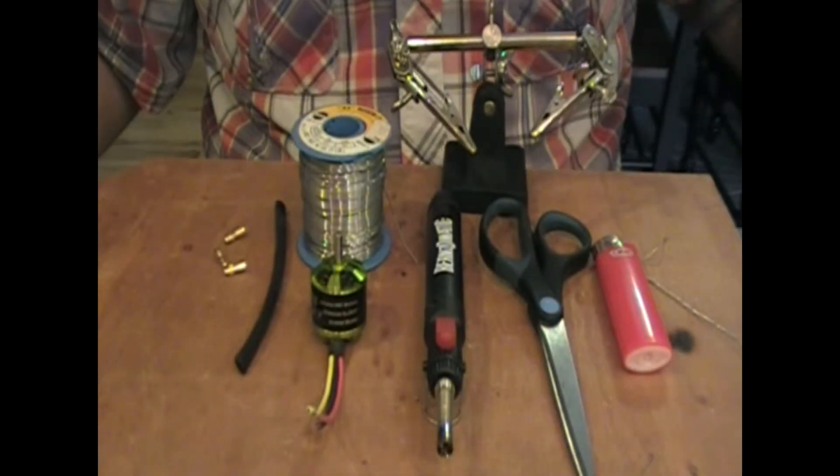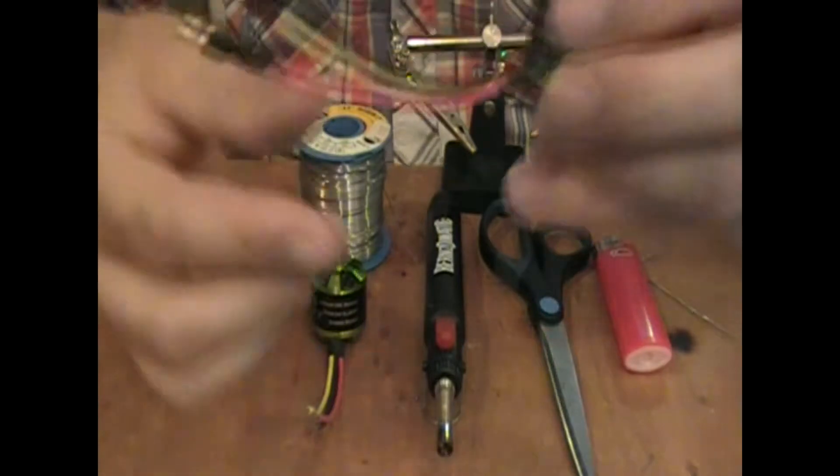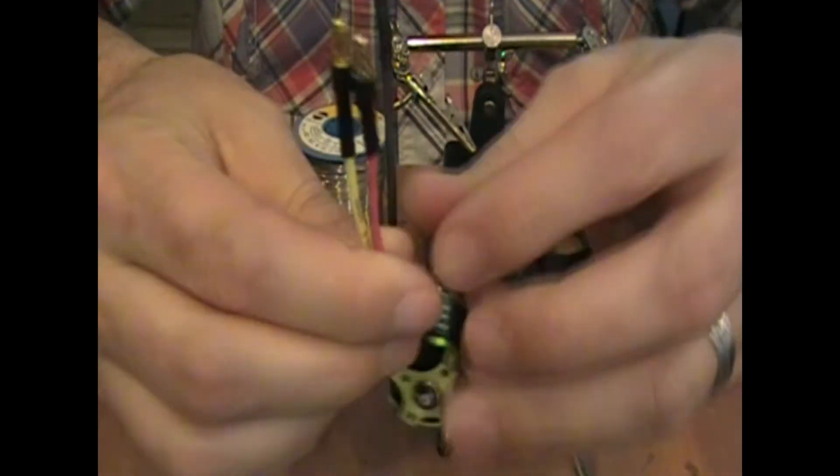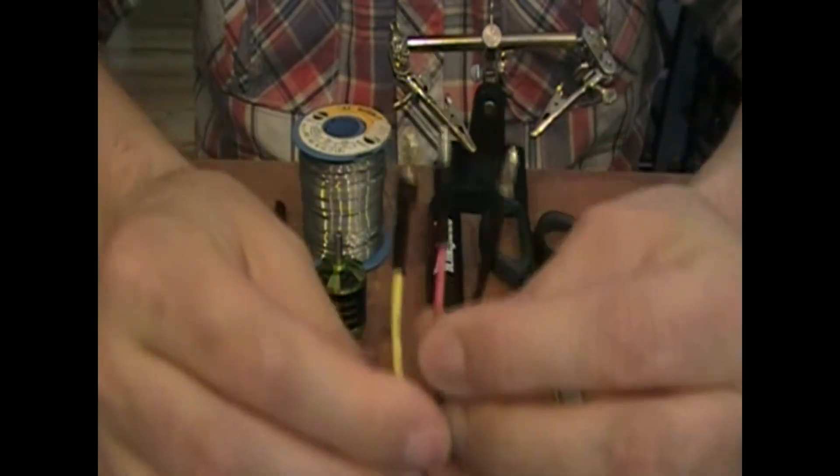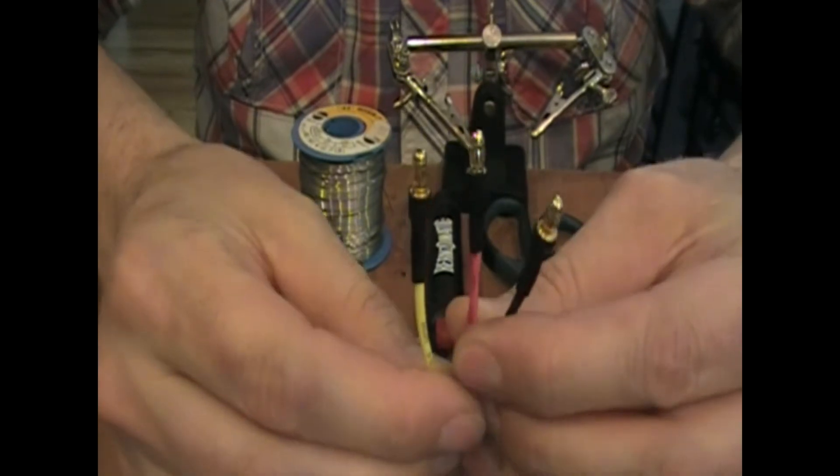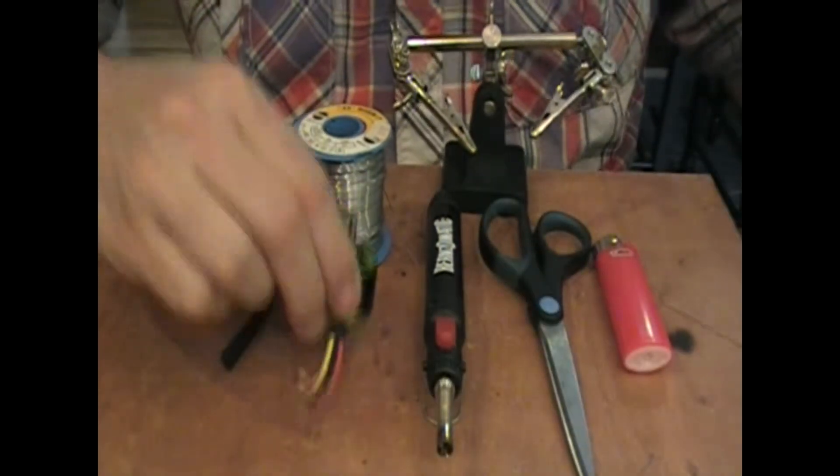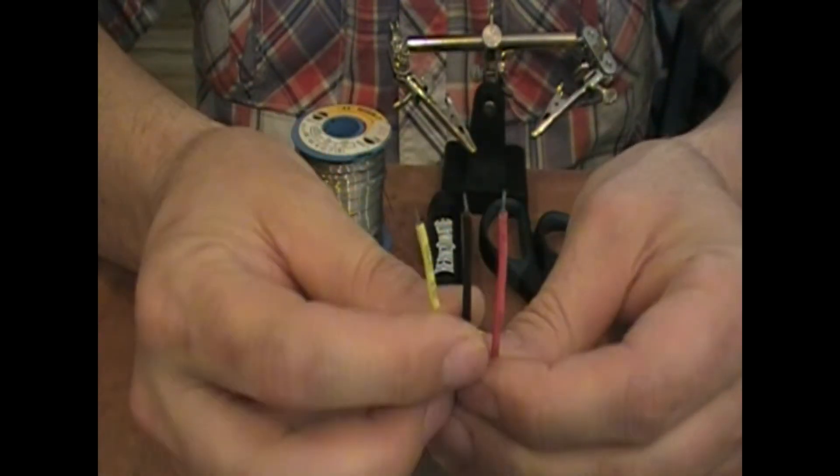Today I'll be doing a short how-to video on how to solder your 3.5 millimeter bullet connectors to your motors or ESCs. To start off you'll want to pre-tin the wires coming out of your electronics.